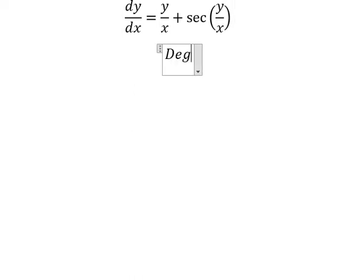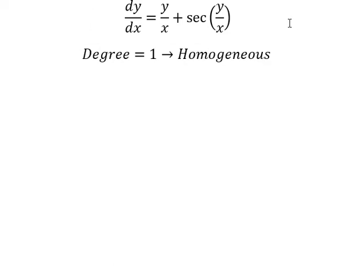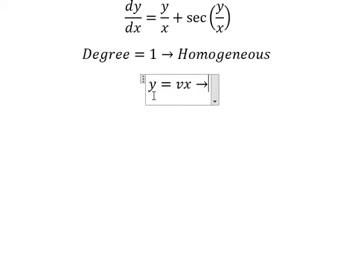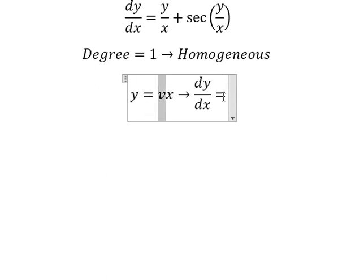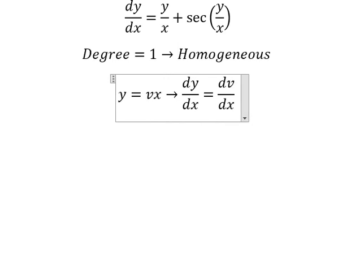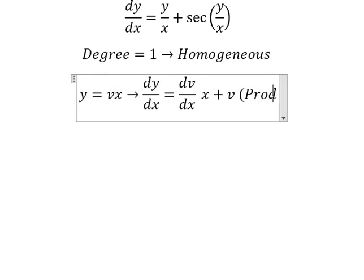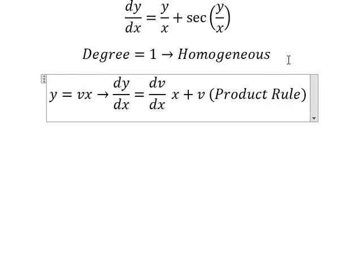Because the degrees are number one, this is a homogeneous equation. So I will use the substitution y equals vx. From this, we need to differentiate both sides. We get dv over dx multiplied by x, plus v — that is from the product rule of differentiation.